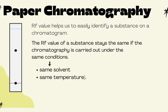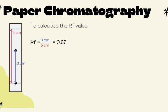We use the RF value to help identify a substance. The RF value remains the same if the experiment is carried out under the same conditions — the same solvent and the same temperature — even if a longer strip of chromatography paper is used. To calculate the RF value, divide the distance traveled by the substance from the start line to the middle of the spot by the distance traveled by the solvent from the start line to the solvent front — for example, 3 divided by 5. Note that RF value has no unit.